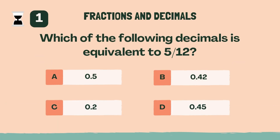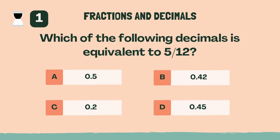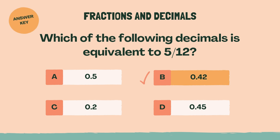Which of the following decimals is equivalent to 5 twelfths? B, 0.42.